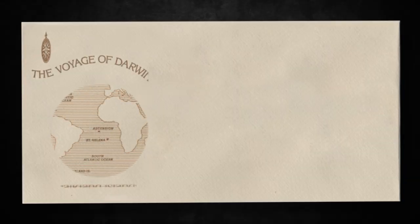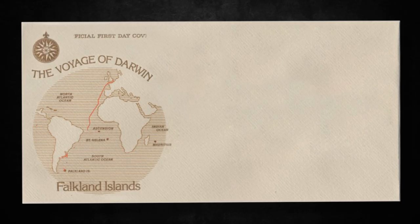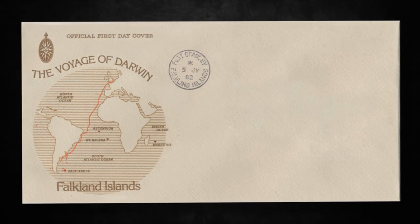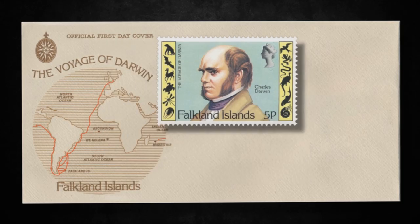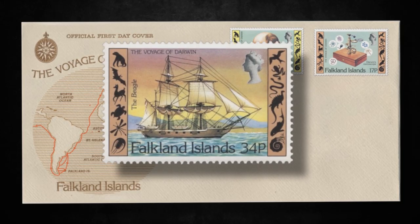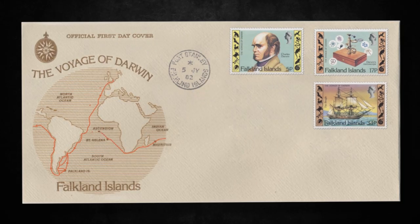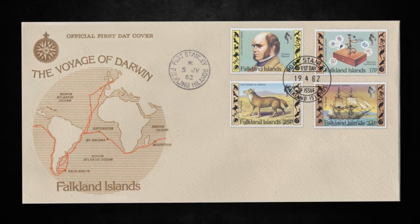The voyage of Darwin aboard the HMS Beagle is beautifully illustrated in this commemorative first day cover, dated 5th July 1982, released by the Falkland Islands. It features stamps of Darwin, an image of his microscope, the HMS Beagle, and a rare image of the Warrah, also known as the Falkland Island Wolf, which is now extinct.